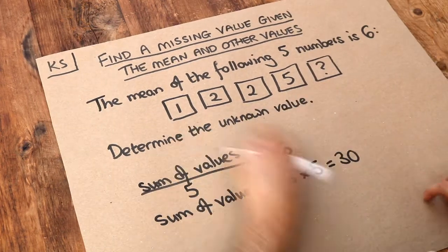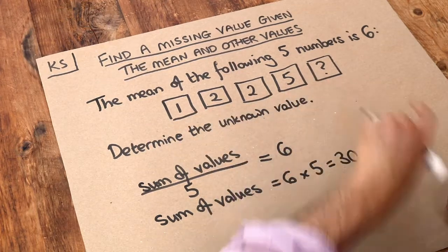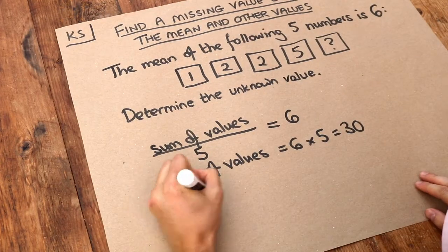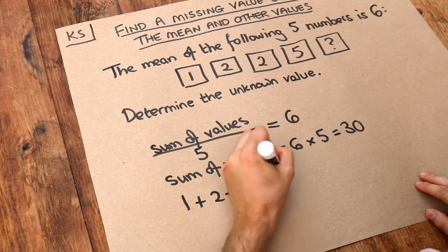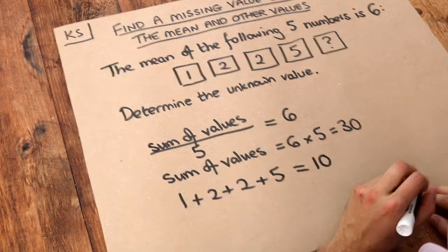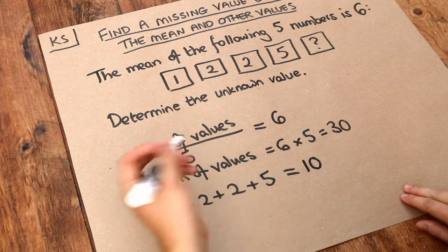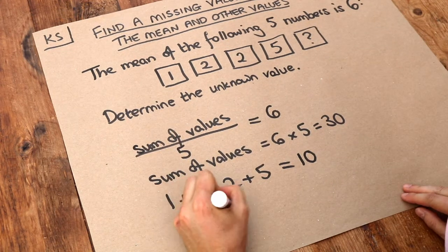So if we know these add up to 30, we just need to add up the other ones and just find the difference from 30. So 1 plus 2 plus 2 plus 2 plus 5 is equal to 10. And that means if they add up to 30, the remaining number must be 20. We just do 30 minus 10, and that gives us 20.